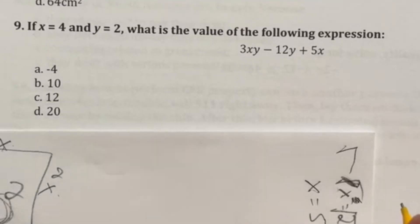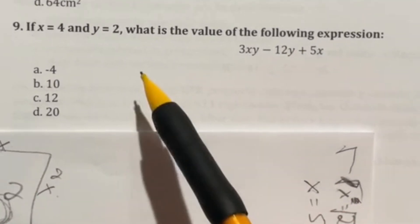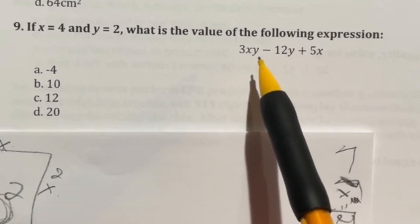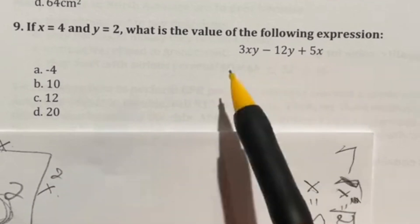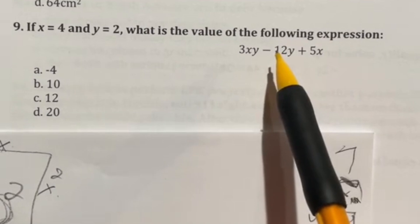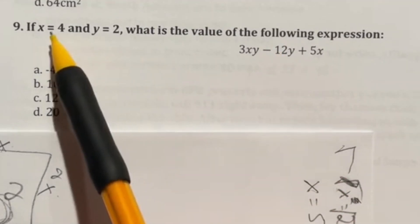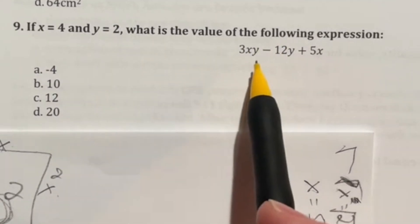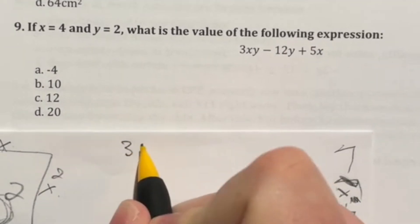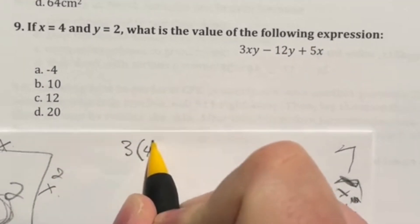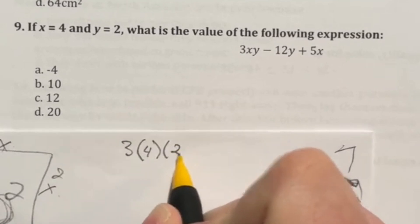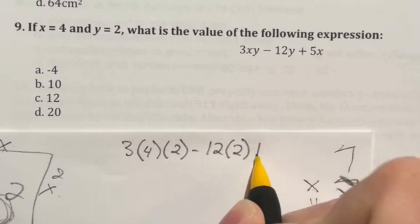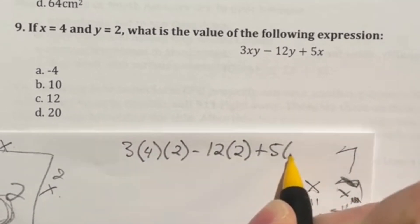Number nine says if x is equal to four, and y is equal to two, what is the value of the following expression: three times x times y minus 12 times y plus five times x. This is your basic plug and chug question. So you just need to take a four and put it in everywhere we see an x and take a two and put it in everywhere we see a y. So let's go ahead and write that out. We have three times the four times the two minus 12 times the two plus five times the four.